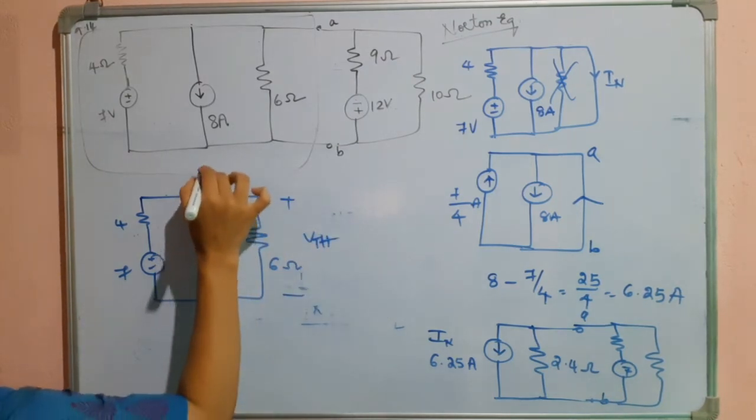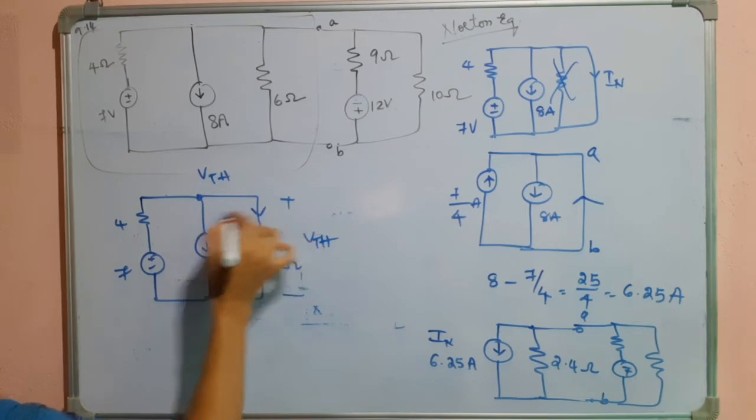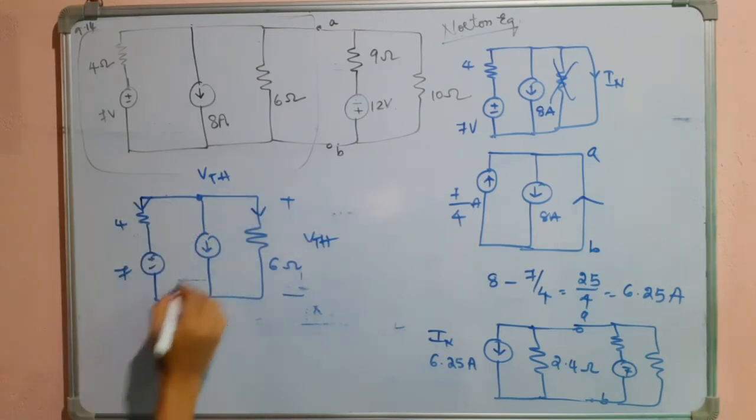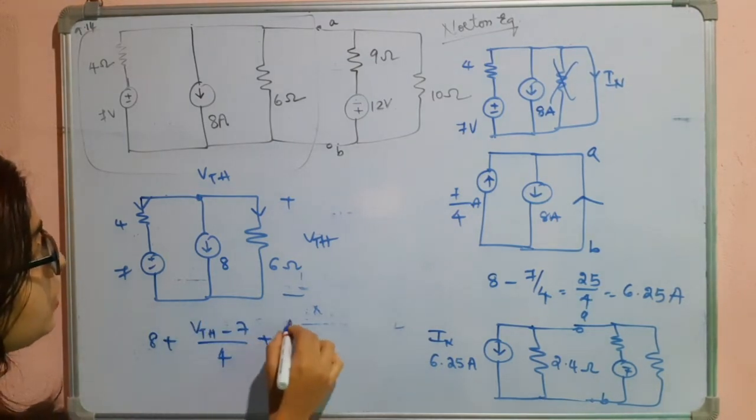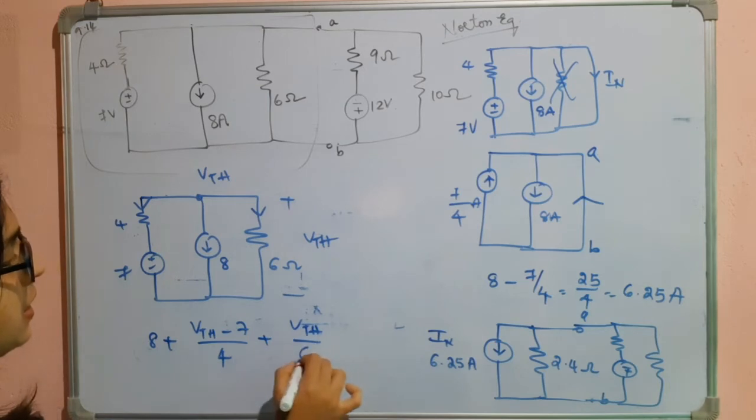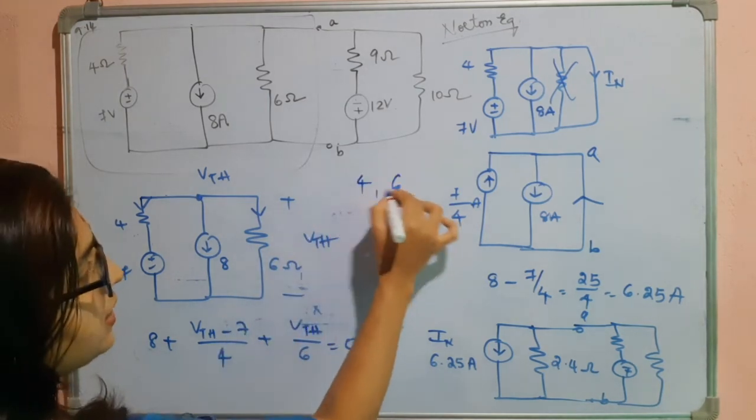So I will consider this node voltage as Vth. I will mark the directions like this. So this is 8 plus Vth minus 7 divided by 4. I will put the nodal analysis here, plus Vth divided by 6, that is equal to zero. So I will take the LCM of 4 and 6.